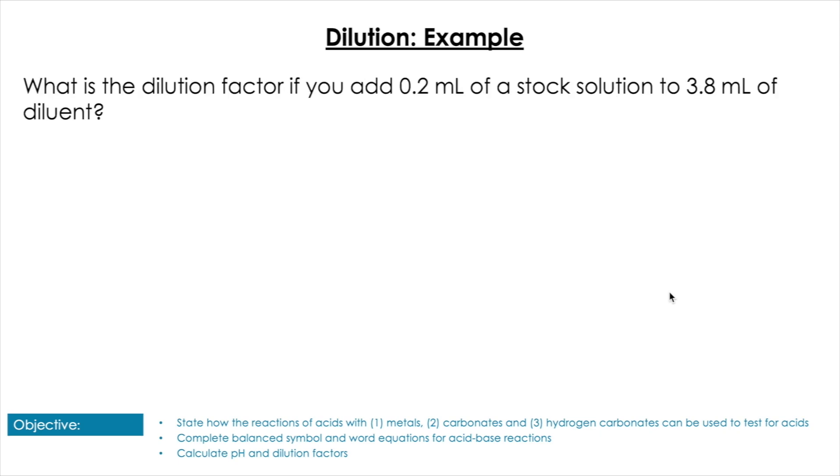Let's walk through another example here. I want to work out my dilution factor and I have 0.2 mil, so I'm going to do 0.2 divided by the new total, which is 0.2 plus 3.8, which is going to be 0.2 over 4, which is going to be 1 to 20. So there's a 1 to 20 dilution factor.